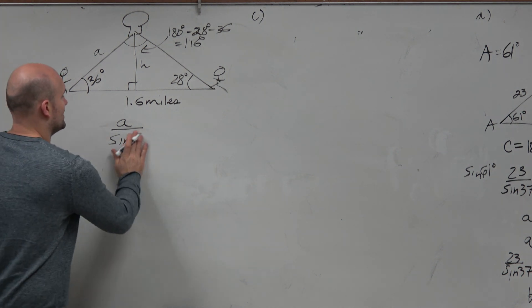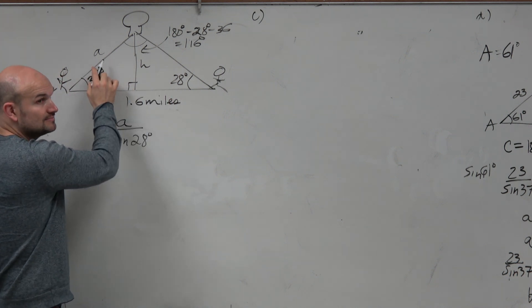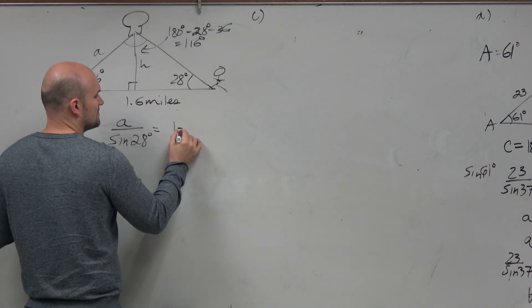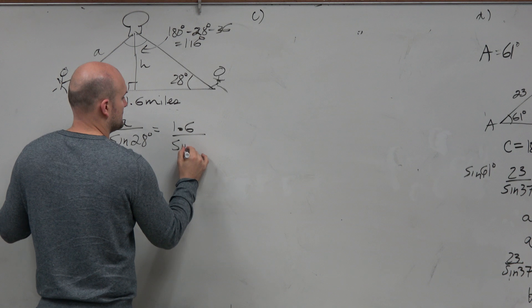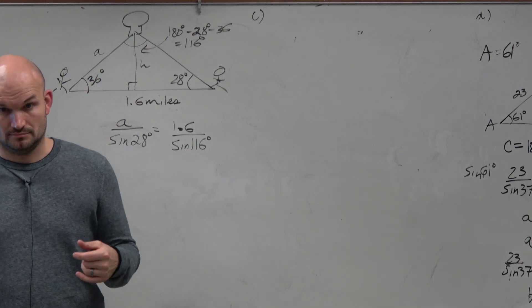So we have A over sine of 28 degrees, right? That's the corresponding angle with the side, is equal to 1.6 all over the sine of 116.